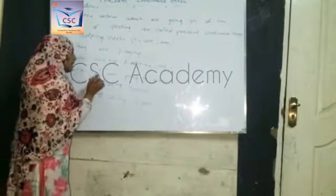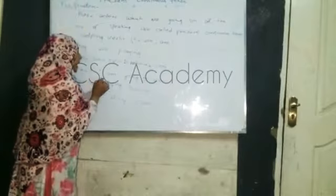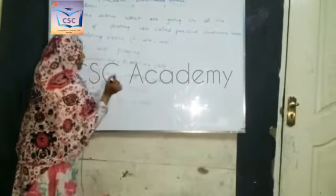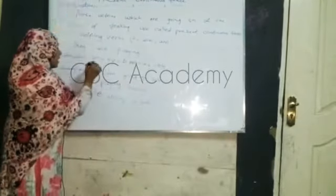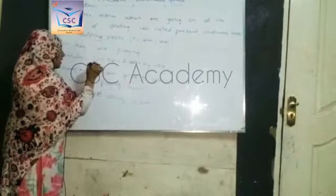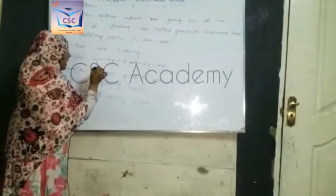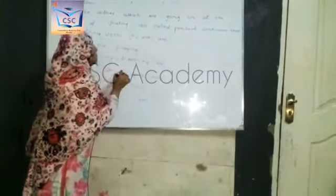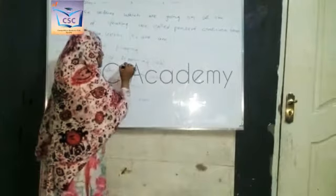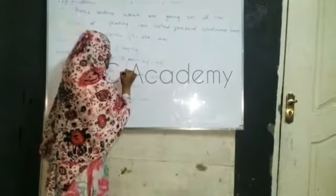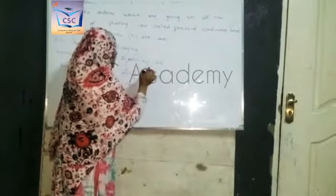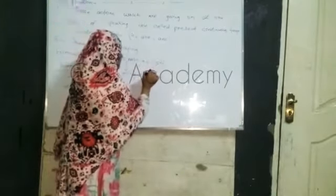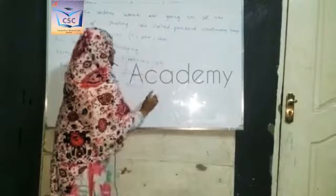Now I will give you three examples. Number one: 'I am going to school.' In this sentence, 'I' is the subject, 'am' is the helping word, and the first form of the word is 'go' plus ING. And 'school' is the object.